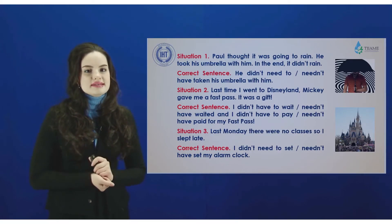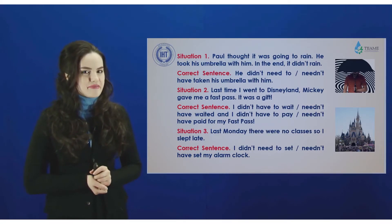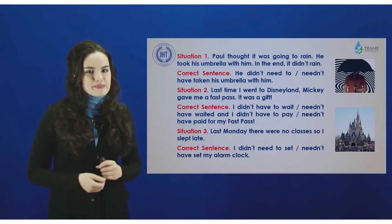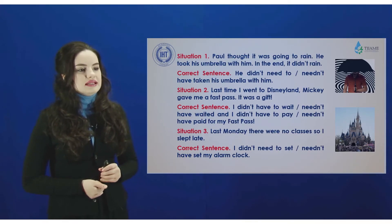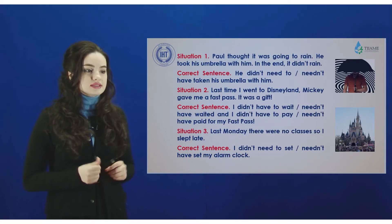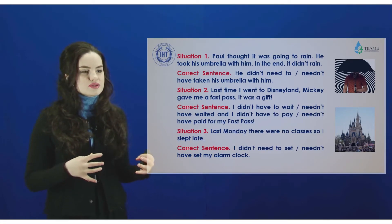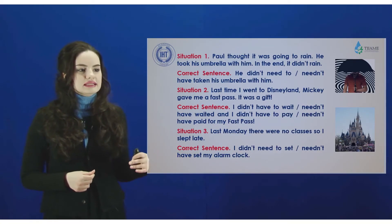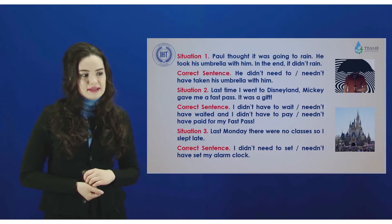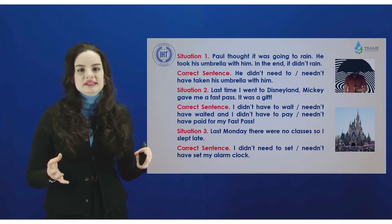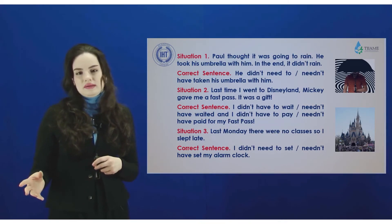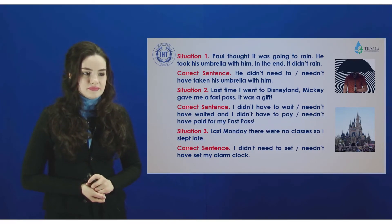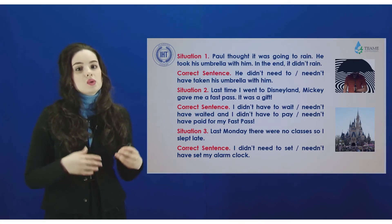Here are some examples — the most interesting part of our topic. How should you use these structures and modal verbs in the past? For example: 'He didn't need to or needn't have taken his umbrella with him' — no necessity. In some past time there was no rain, so it wasn't necessary for him.